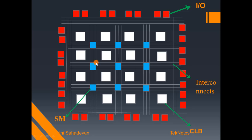Here we have horizontal and vertical lines, which are known as channels — these are actually the interconnects. Between CLB and CLB, and between CLB and IOB, we use these interconnects via horizontal and vertical channels. Next, we have white boxes — those are CLBs. In this example, there are 16 CLBs, though the number differs between FPGAs.